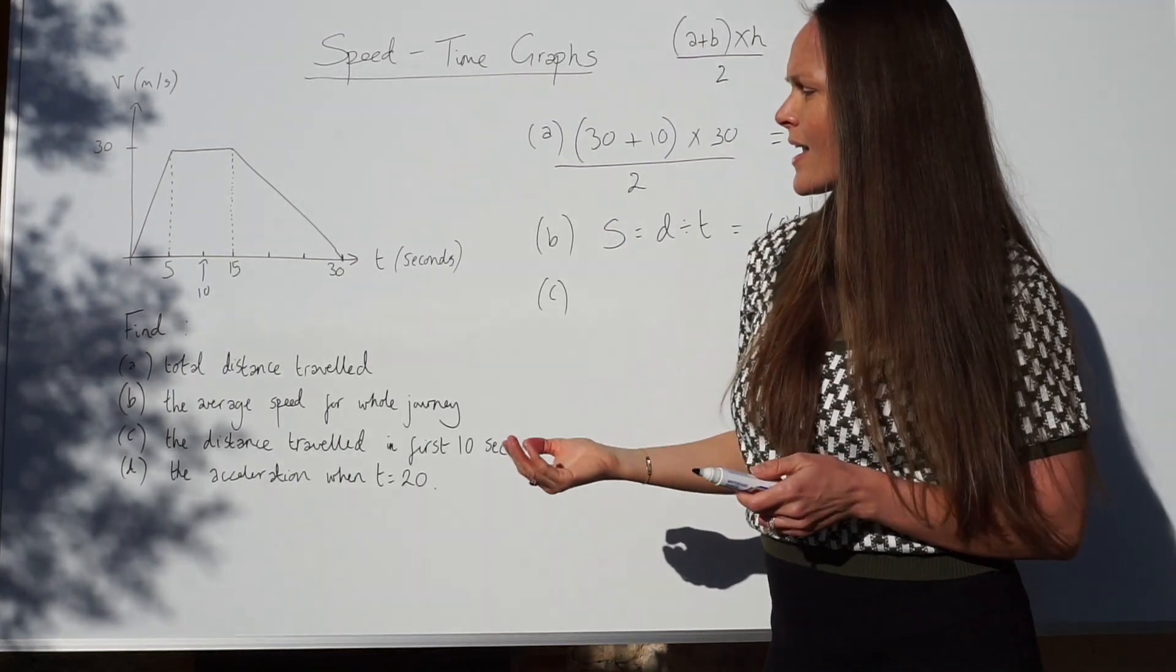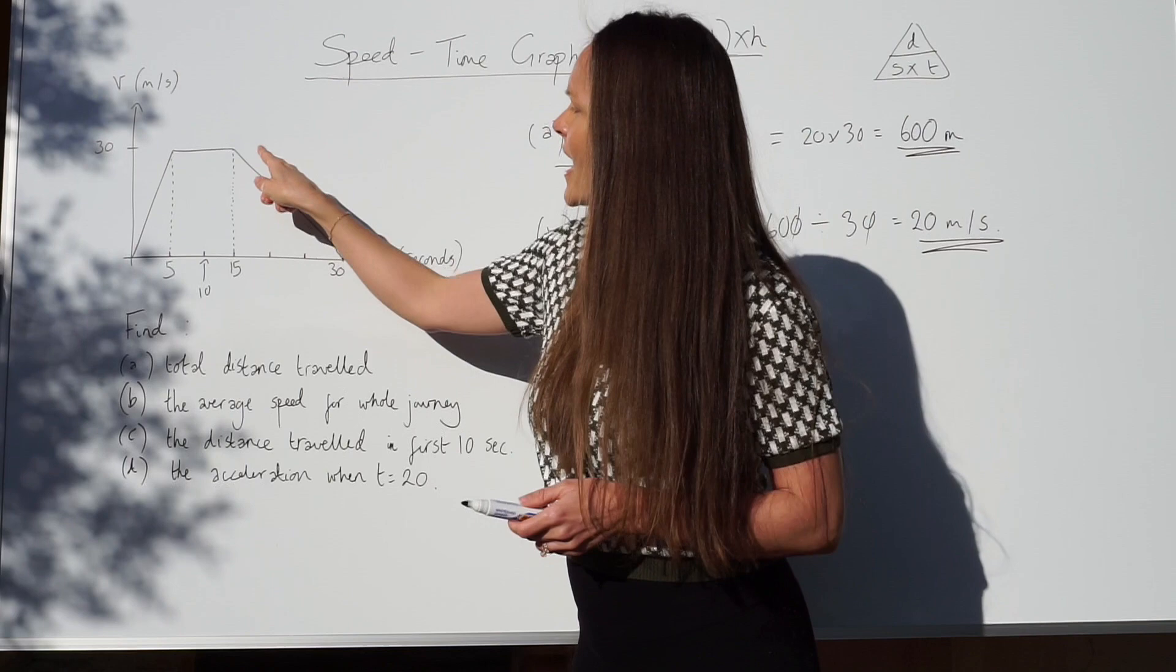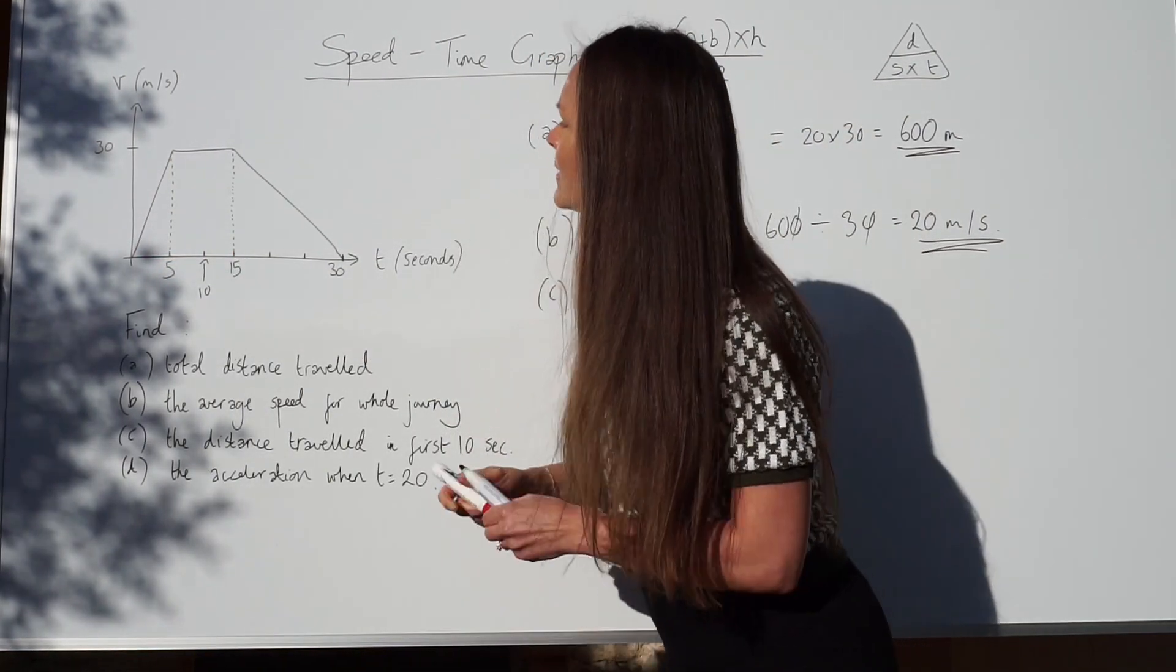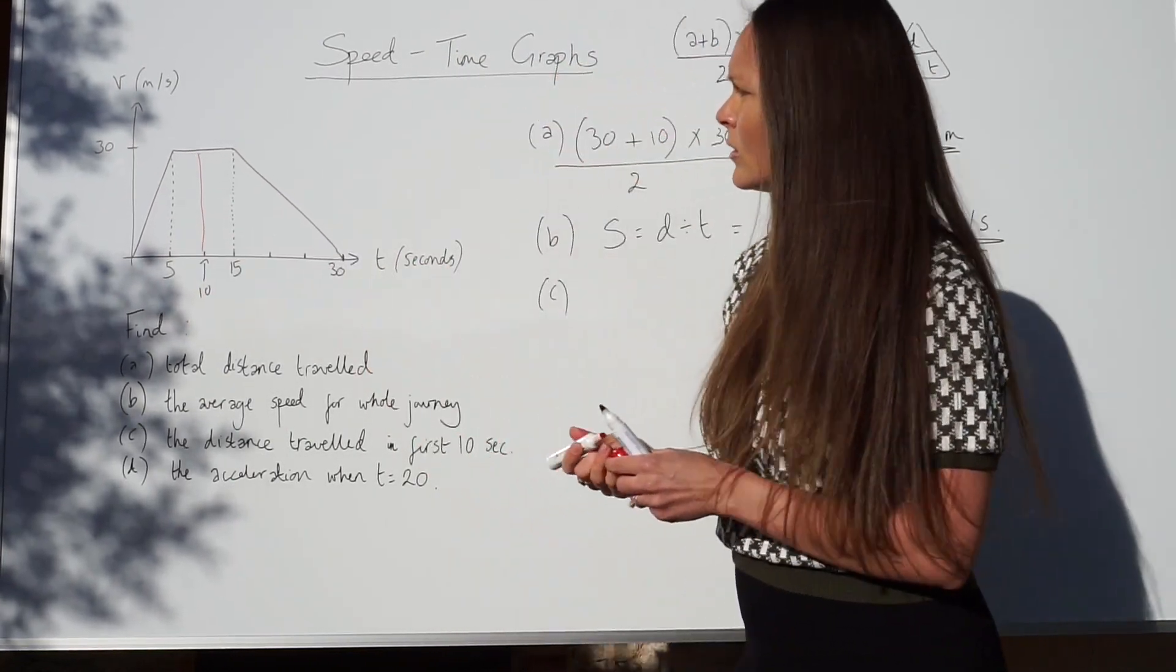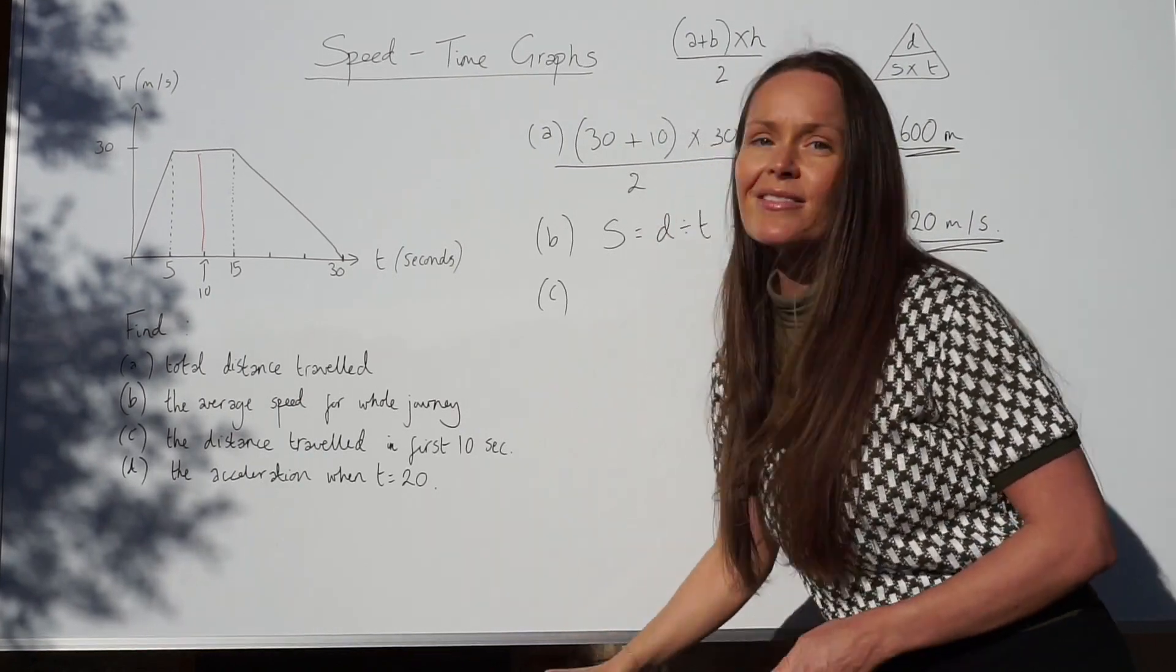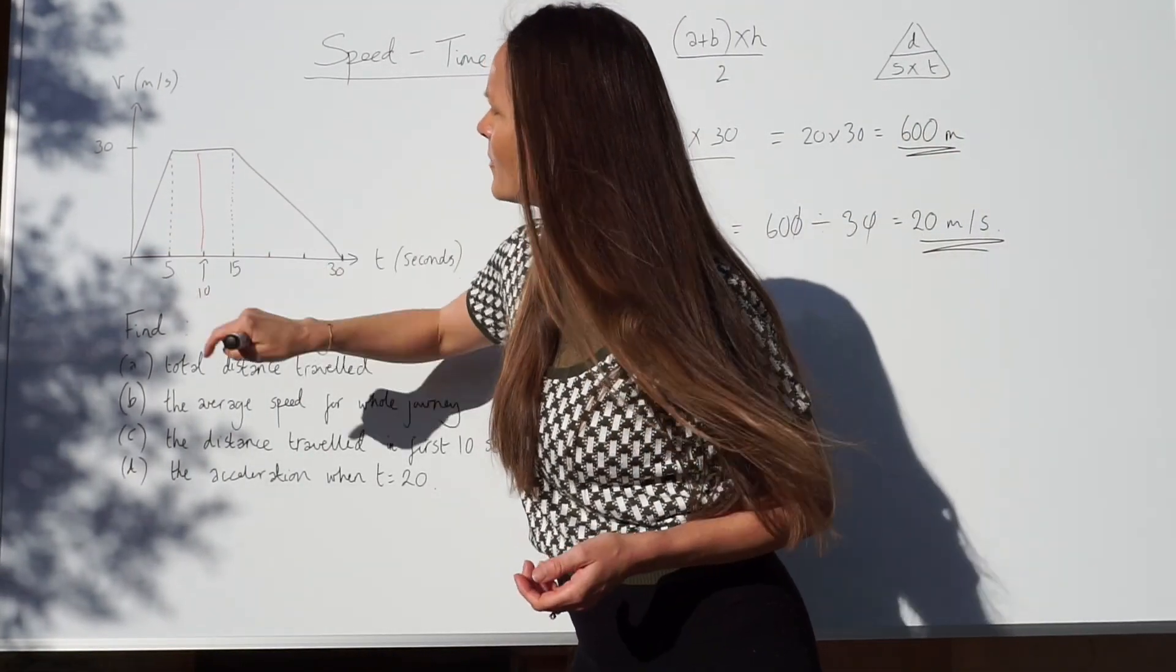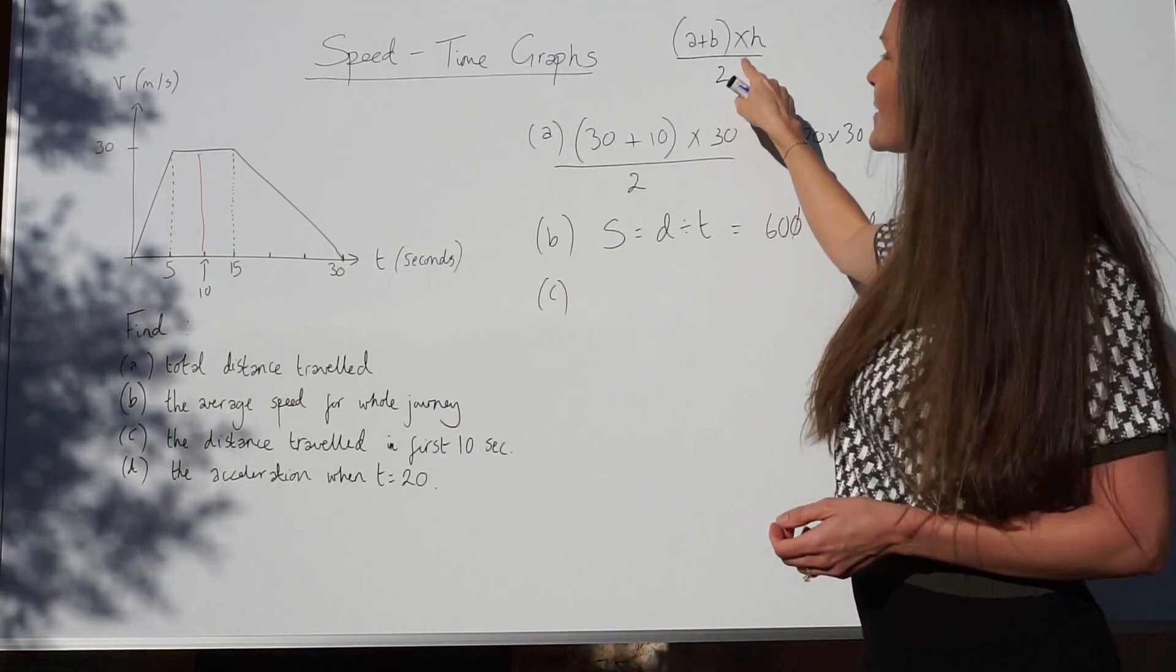Similar to part A, you have to work out the area. But this time, instead of working out the area of this whole shape, we only need to work out the area of this triangle and this rectangle. Or, just like before, we can work out the area of the trapezium because this shape is a trapezium. It has one set of parallel sides.